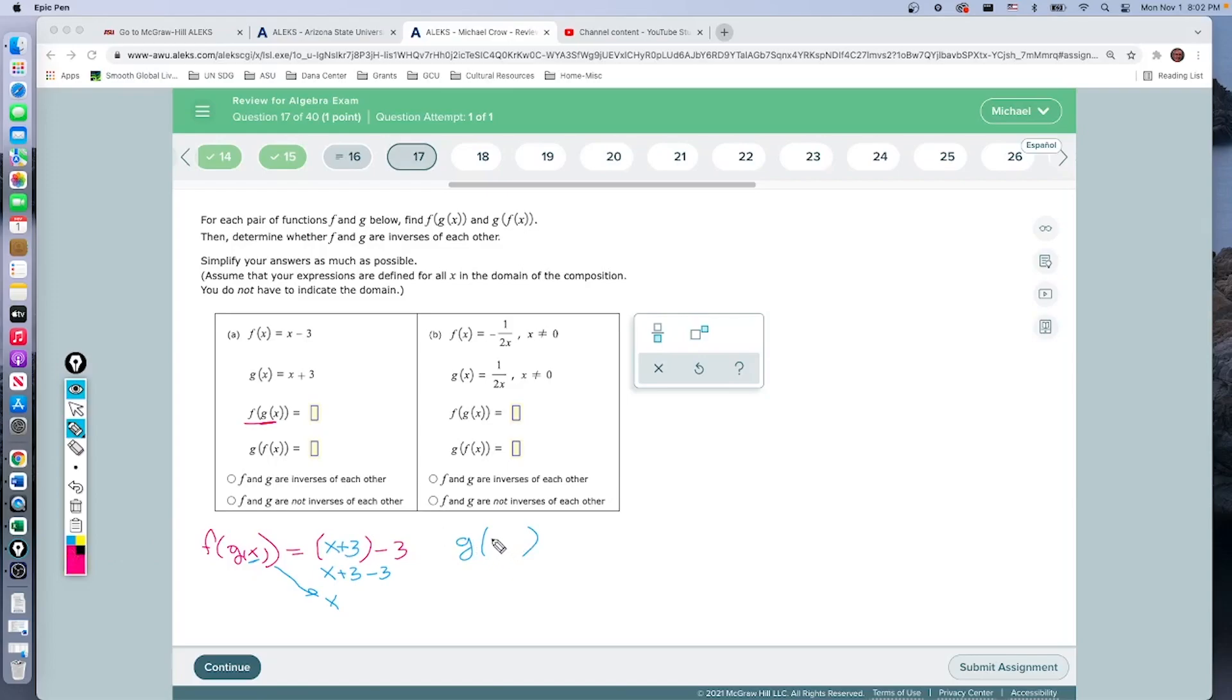So g of f of x: we're going to take the g function, which is our outside function, x plus 3. We write parentheses plus 3. In that parentheses, we put the f function, x minus 3. Just like last time, there's no exponent, no number in front, so we can remove the parentheses. That gives us x minus 3 plus 3. We combine like terms: negative 3 plus 3 is 0.